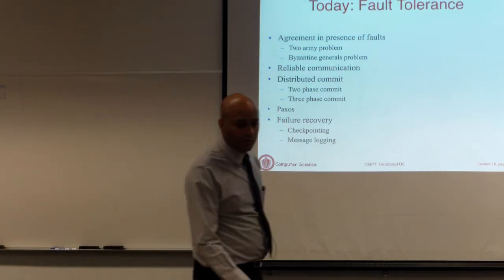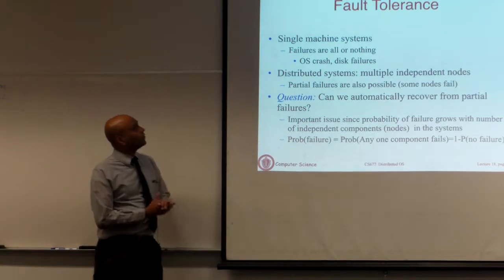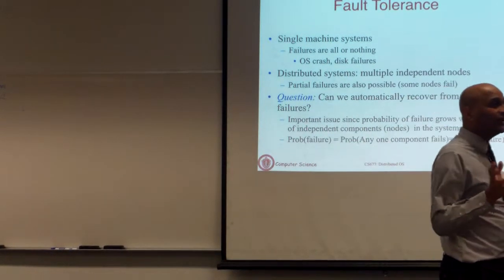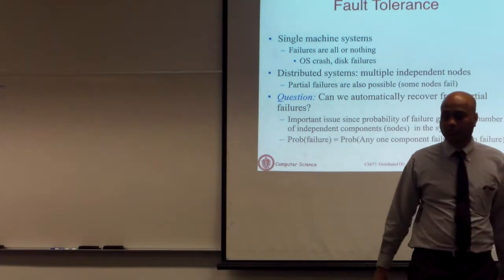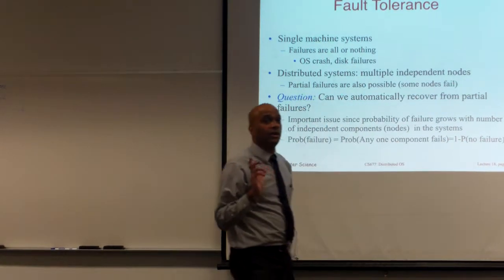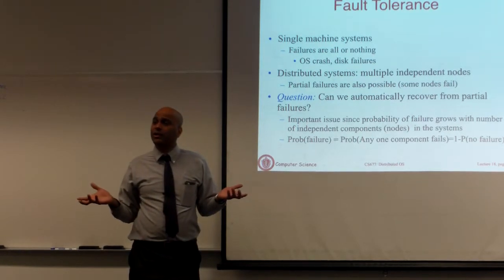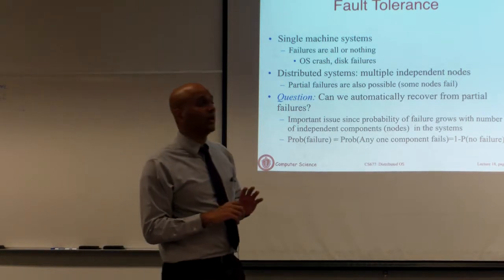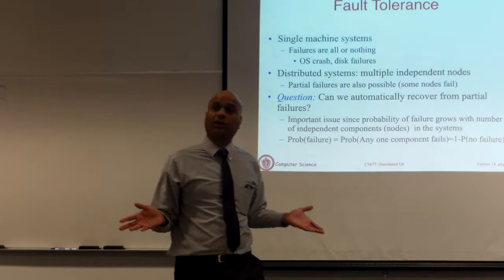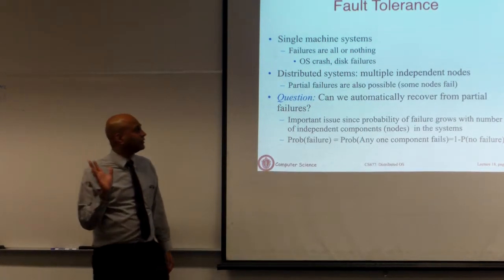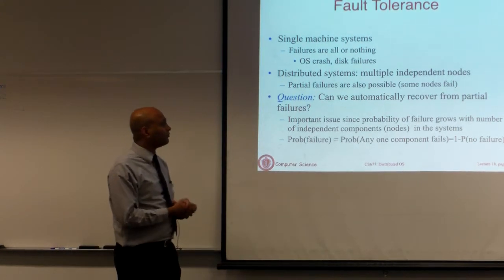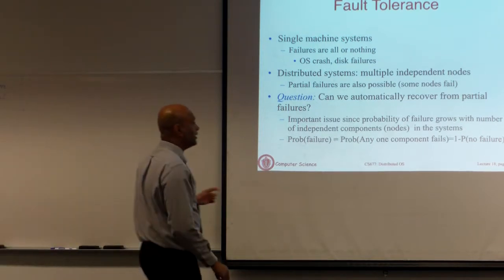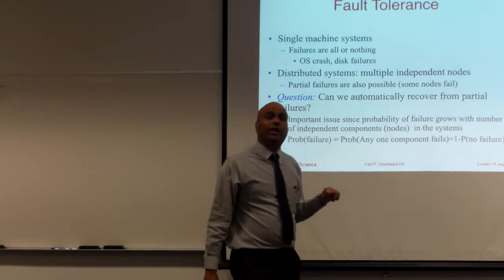I am going to switch gears and start a new topic. I finished consistency and replication. When we talked about replication, I said there are two issues: how to keep data consistent, and that replication can also help achieve fault tolerance. If some copies fail, other replicas can step in and continue to perform the job. In a single machine system, if the machine fails, the entire application stops. In a distributed system, if some nodes fail, other nodes can take over — if you design the application well so there are no single points of failure.